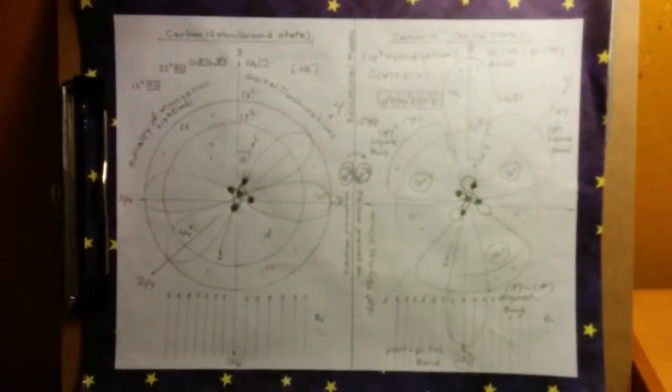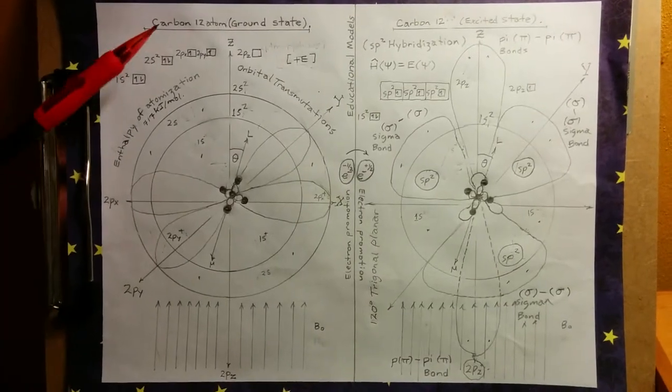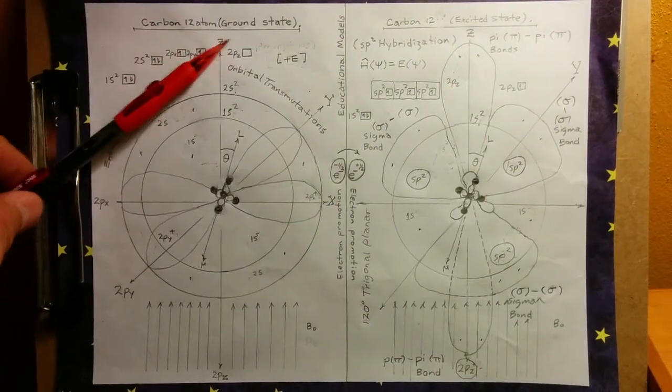SP2 hybridization part one. Looking at the carbon 12 atom in its ground state.